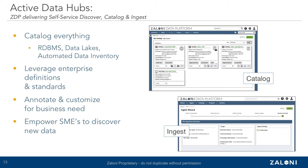A core capability of any active data hub is the ability to discover, catalog, and ingest data from sources across and even beyond your enterprise. This is critical because it's from this unified catalog of business, technical, and operational metadata that the foundation for all of the other active data hub capabilities will be built. From a ZDP perspective, we focused on several requirements we think makes our catalog complete, first and foremost being the ability to catalog everything — relational data sources, data lakes, file systems, and cloud storage such as S3 or Microsoft Azure buckets.